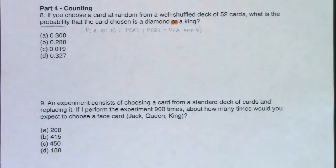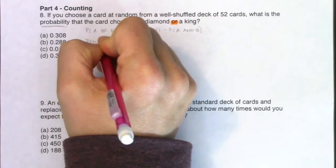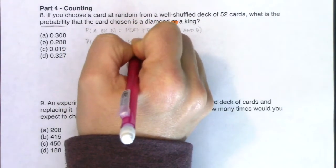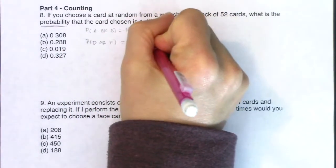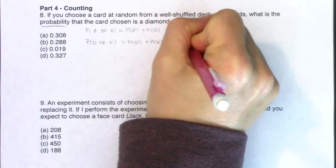Now, I'm not going to use A and B. I'm going to use diamond and king, and I'm just going to use D and K for abbreviations. So I want the probability of diamond or king. It's the probability of a diamond plus the probability of a king minus the probability of a diamond and a king.